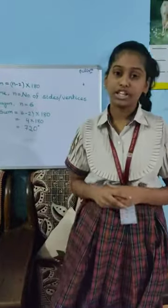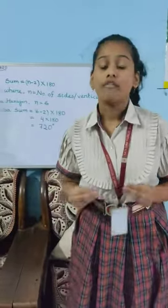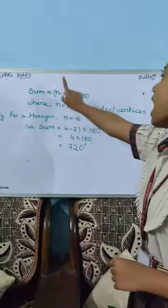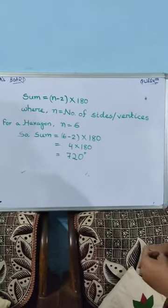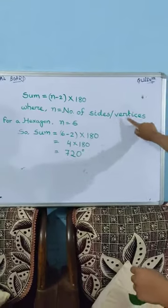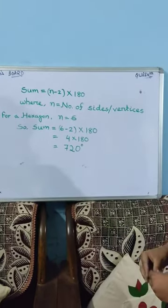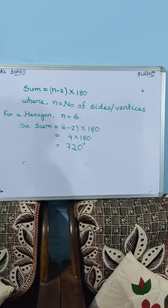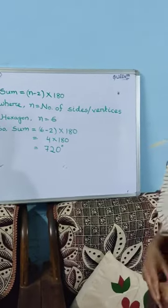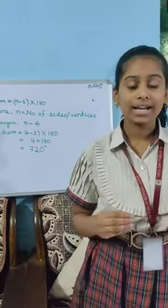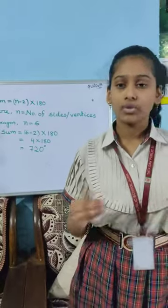We can also find the sum of the interior angles of any polygon by using this formula: (n − 2) × 180 degrees, where n is equal to the number of sides or vertices. For example, for a hexagon, n equals 6. So the sum will be (6 − 2) × 180 degrees, that is 4 × 180 degrees, which is 720 degrees.